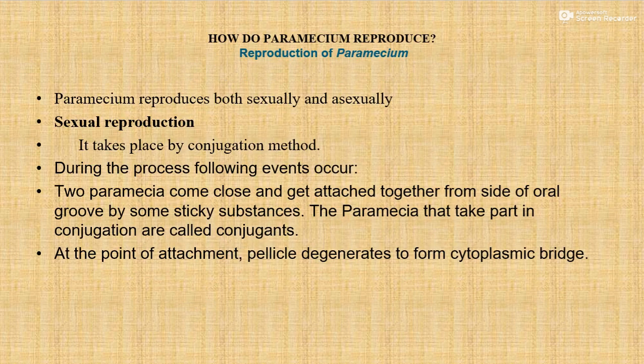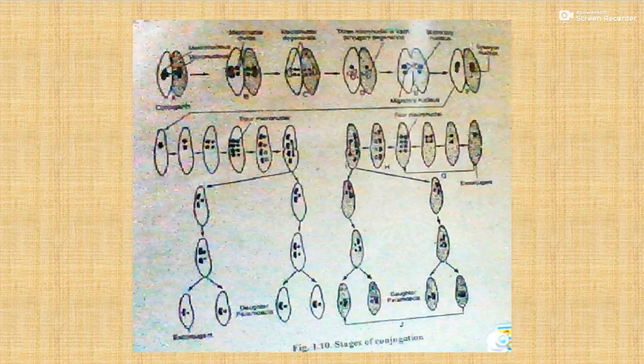How does Paramecium reproduce? Paramecium reproduces both sexually and asexually. Sexual reproduction takes place by the conjugation method. Conjugation is a type of sexual process.